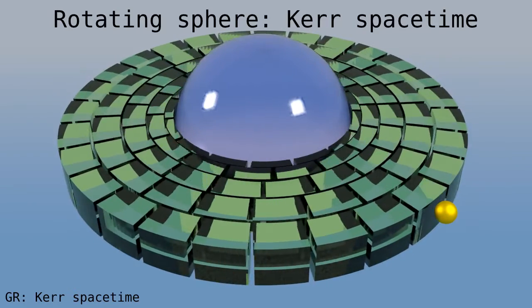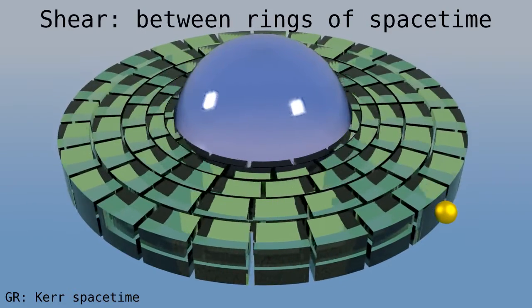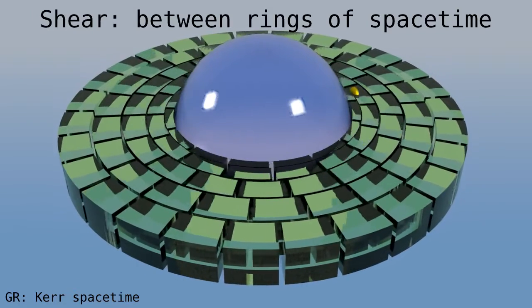Next, we'll drop the particle straight down, which means that it has no angular momentum. What happens? Well, the shearing spacetime pulls sideways on the particle, so that it moves along with the voxels and follows the spiral path.